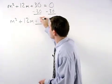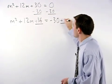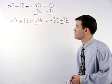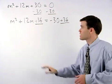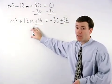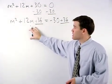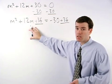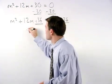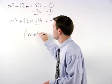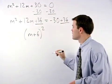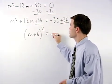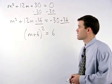So we add 36 to both sides of the equation. Notice that the left side now factors as m plus 6 times m plus 6, or m plus 6 squared. The right side simplifies to 6.